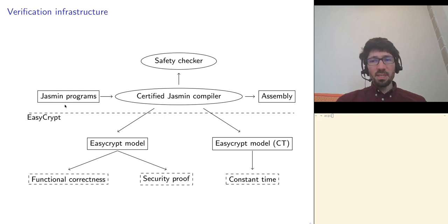This reasoning is done through the EasyCrypt proof assistant. The Jasmin compiler can produce models of the Jasmin program for EasyCrypt. These models can in turn be used to prove functional properties like functional correctness or cryptographic security, but also non-functional properties like constant-time security. All these formal proofs rely on the fact that the source program is actually safe. This is why the Jasmin compiler can also automatically check for safety.